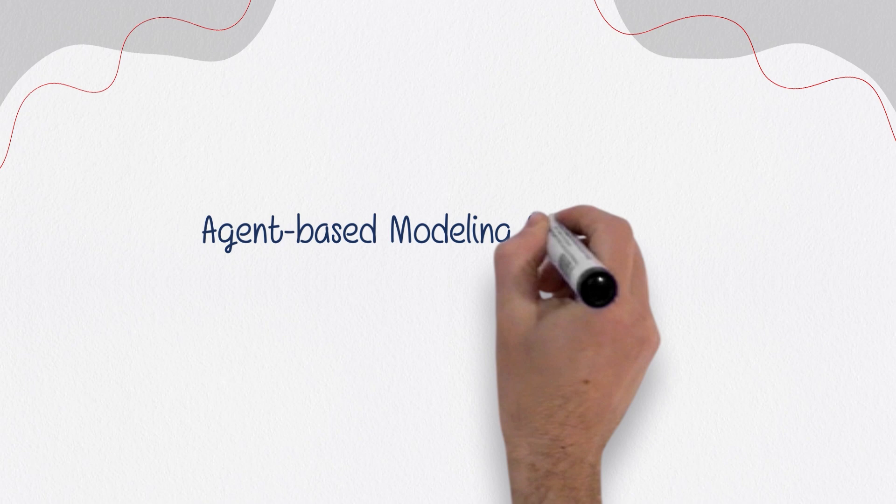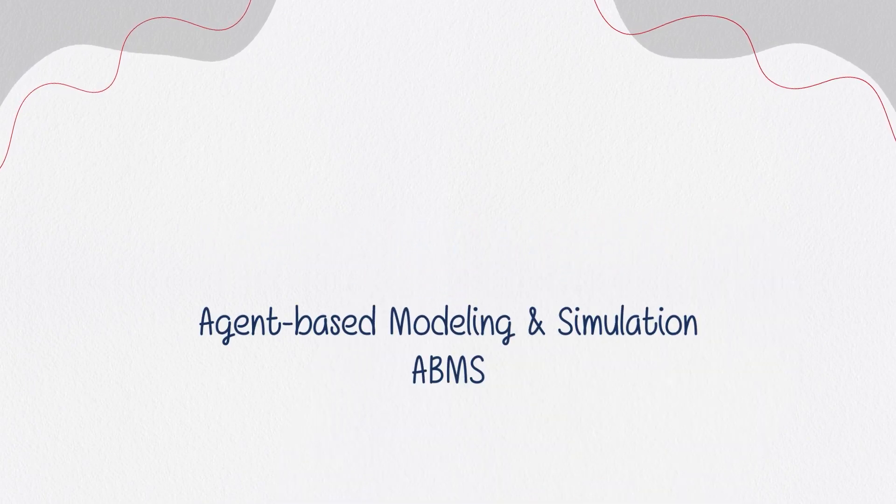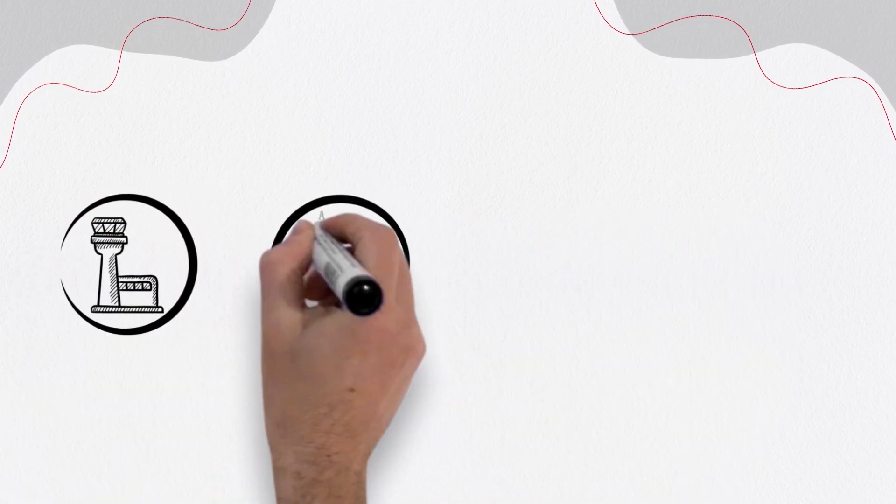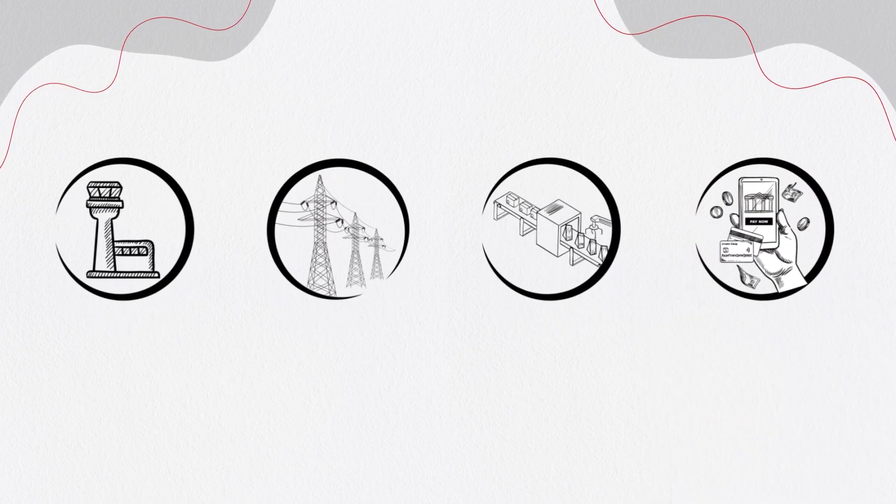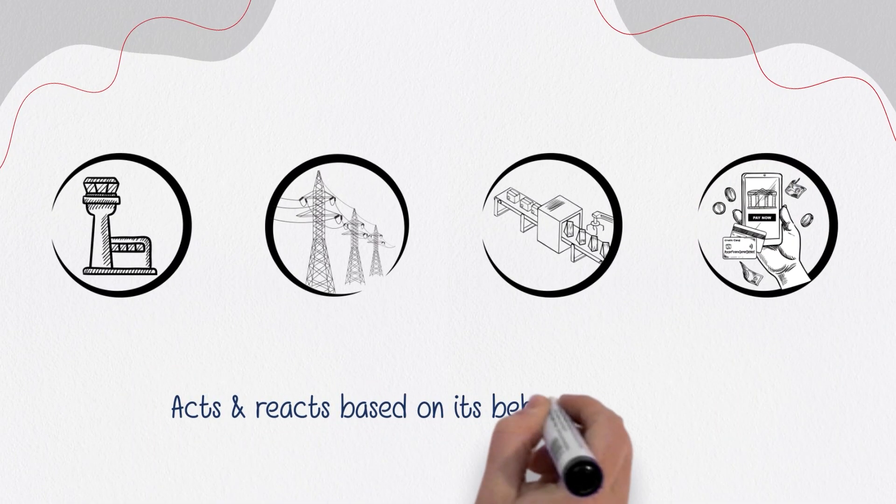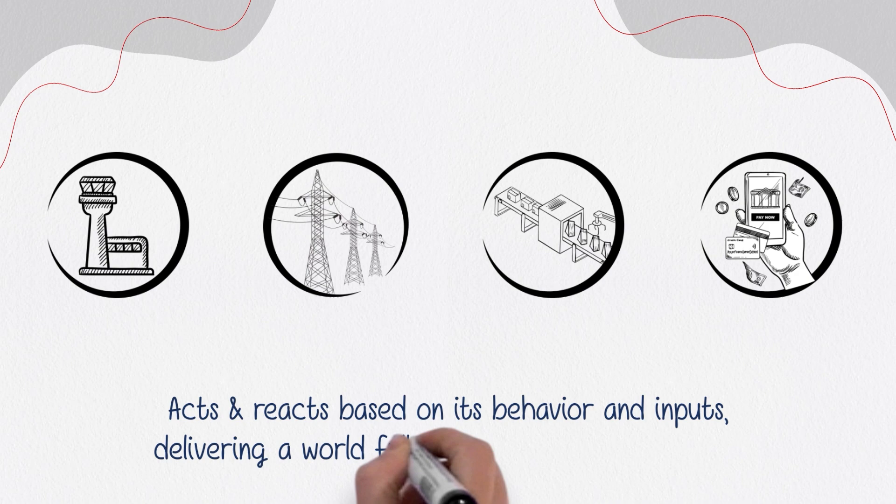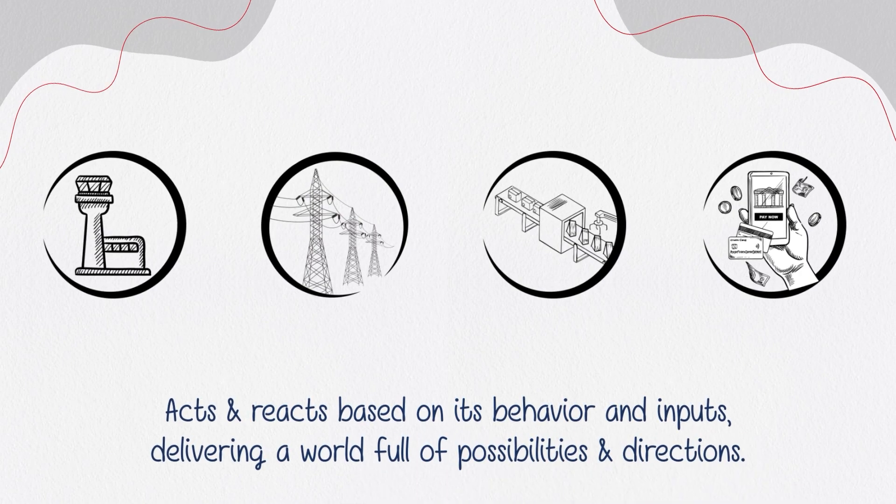Agent-based modeling and simulation, or ABMS, turns each system into an agent with its rules, goals, and decision logic. Each element of a system acts and reacts based on its behavior and inputs, delivering a world full of possibilities and directions.